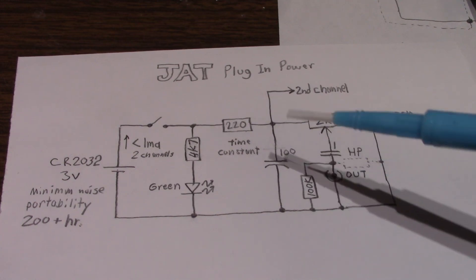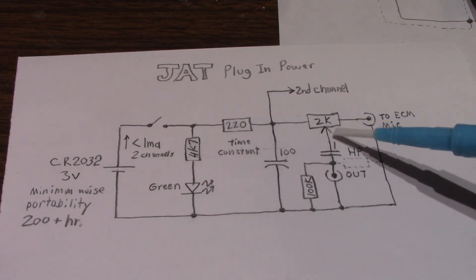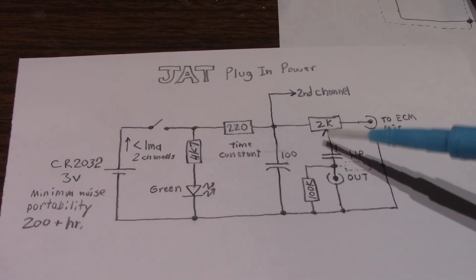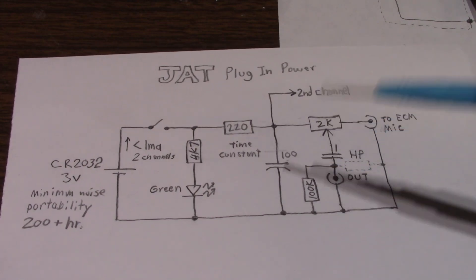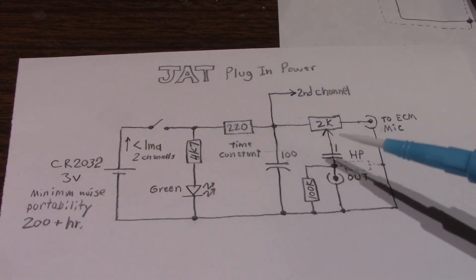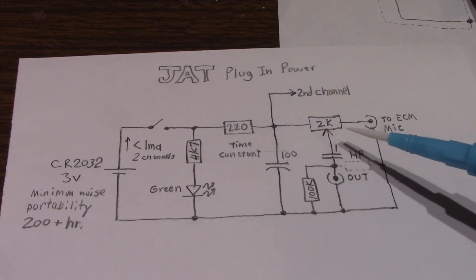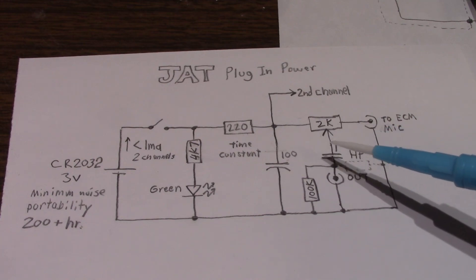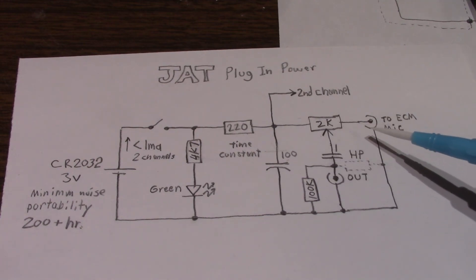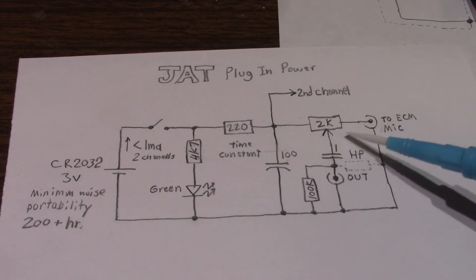But instead of just using a 2K resistor, this is going to be actually a potentiometer. Hopefully I can find a stereo potentiometer of that value. And then I can turn the signal up or down. Because those are very sensitive capsules. And sometimes I want to be able to turn them down if I'm recording something a little louder. So I don't overdrive my sound recorder.